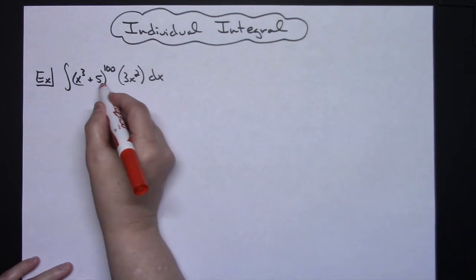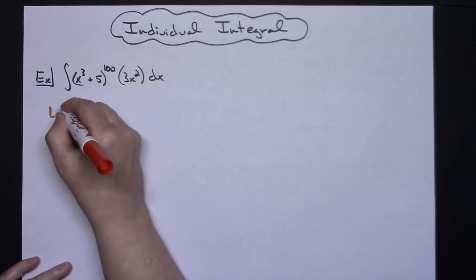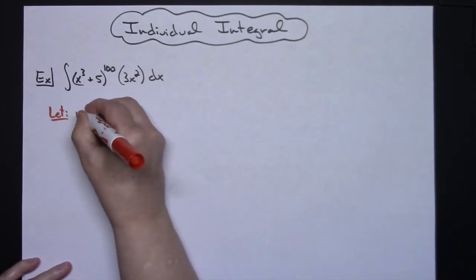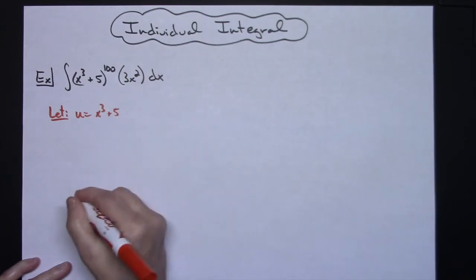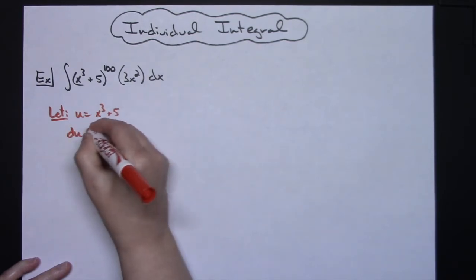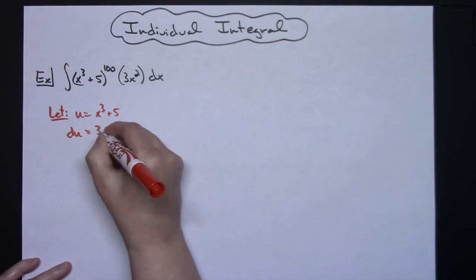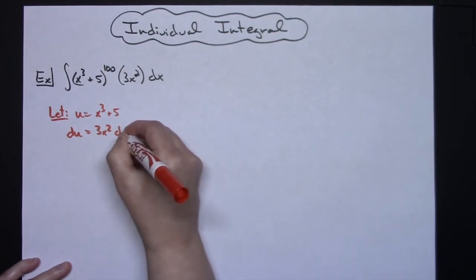So that whole inside part is where I'm going to let my u be. I'm going to let my u be x to the third plus 5. I'm going to go ahead and take the derivative of both sides. du is equal to 3x squared and then dx.